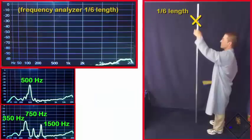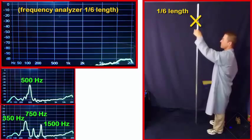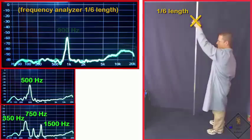When the tube is held at one-sixth the length of the tube, again, only one resonant frequency survives, but this time at about 900 Hz.